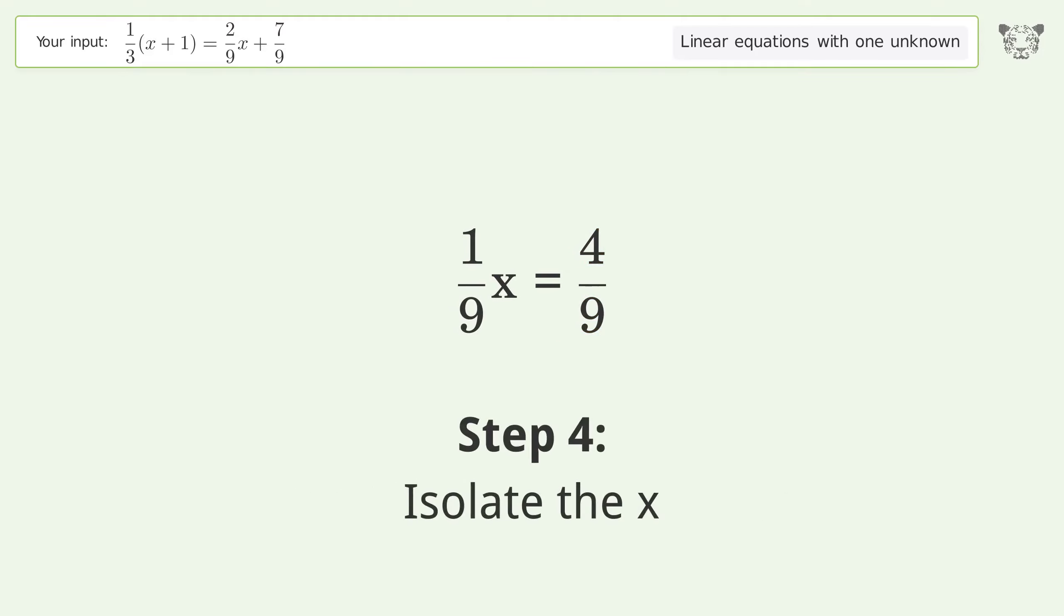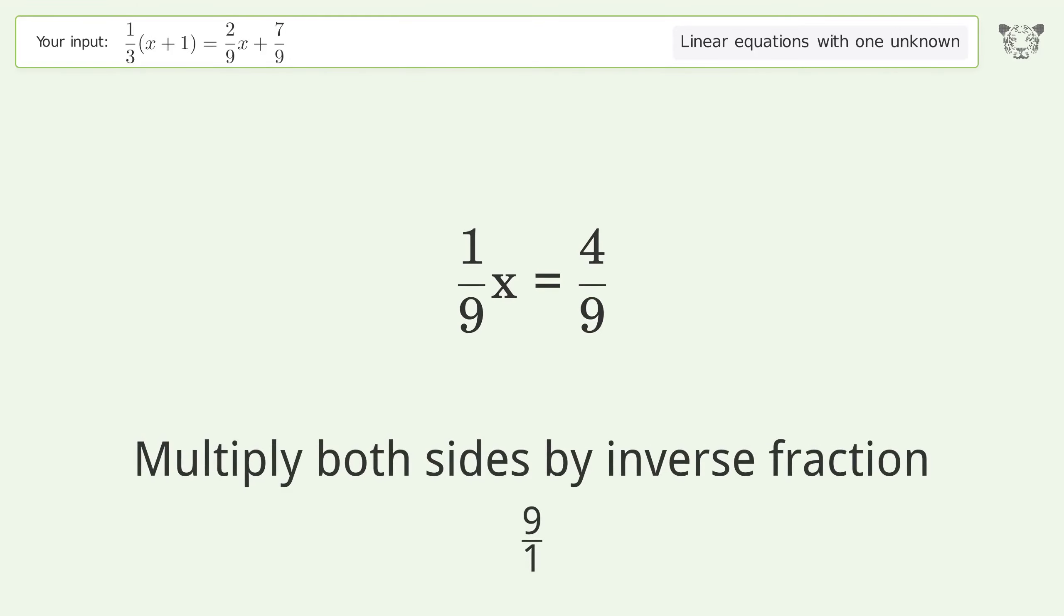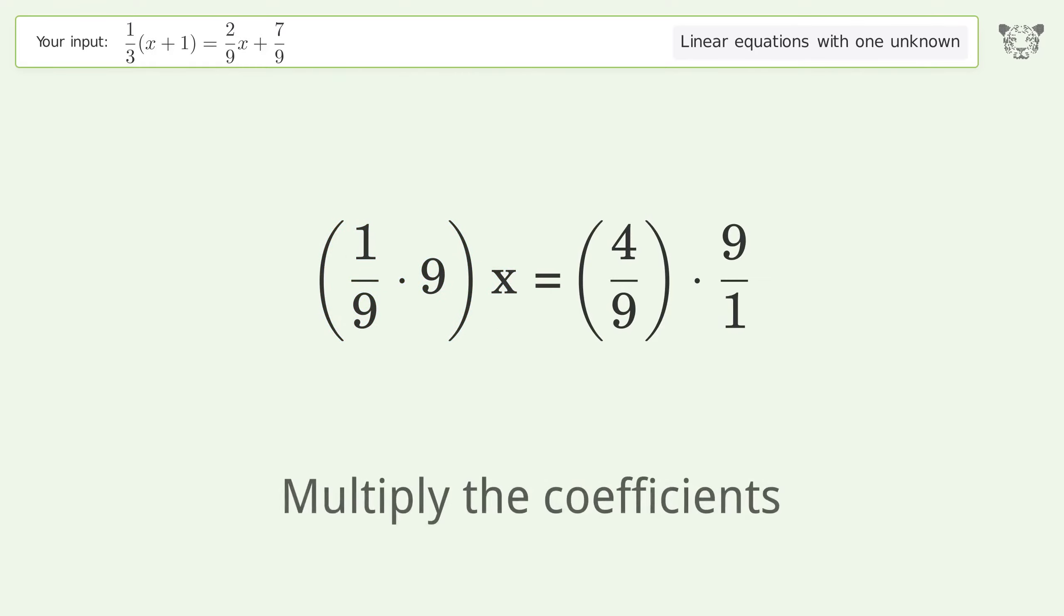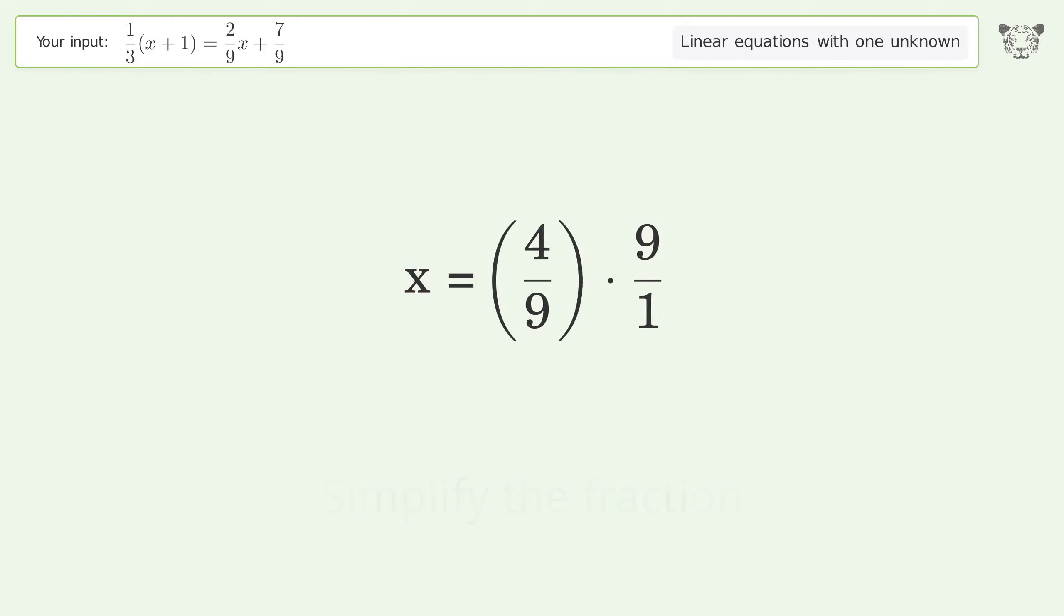Isolate the x. Multiply both sides by the inverse fraction 9 over 1. Group like terms. Multiply the coefficients. Simplify the fraction. Multiply the fractions. Simplify the arithmetic.